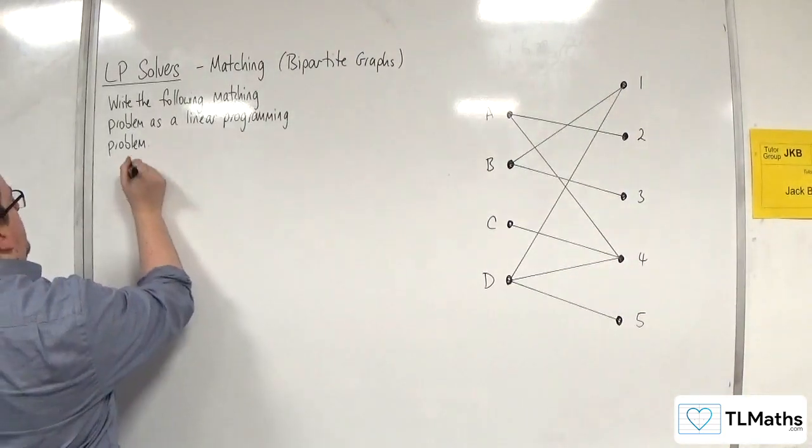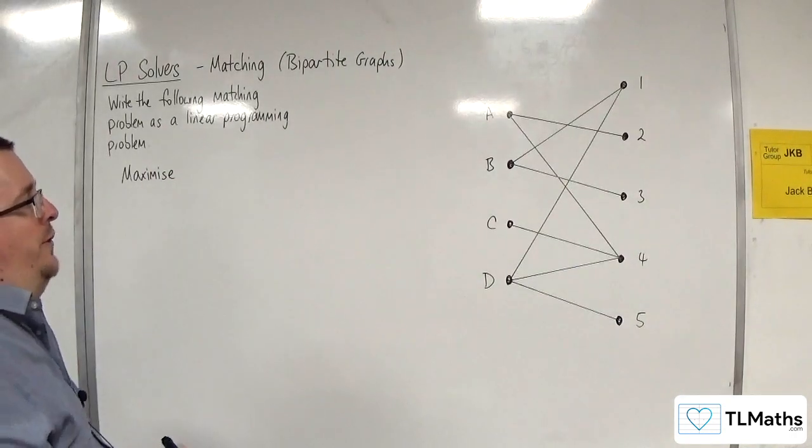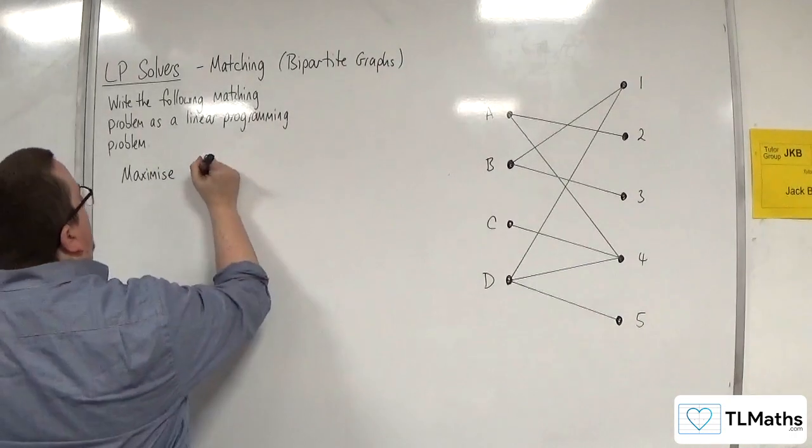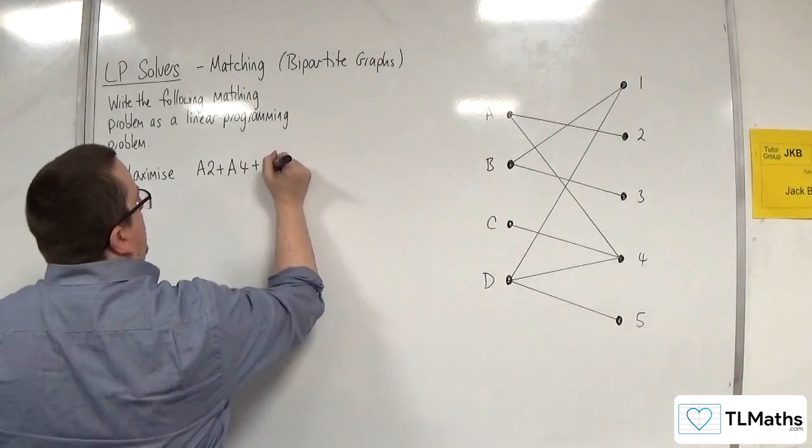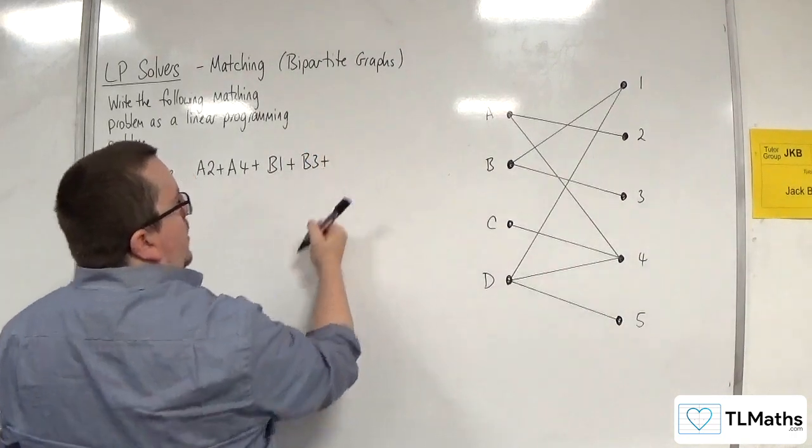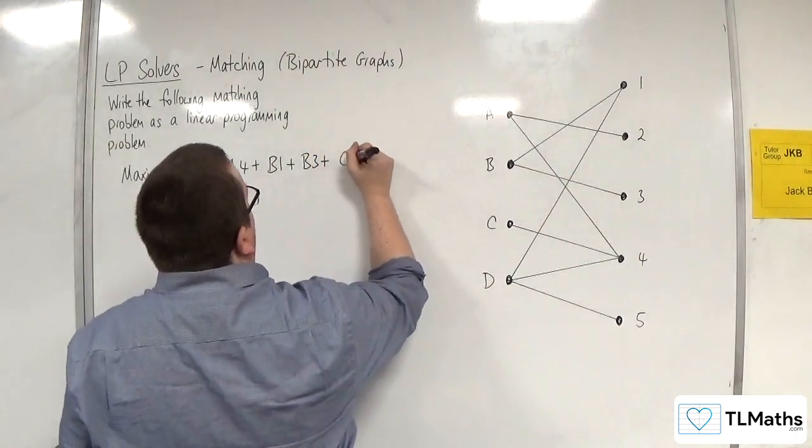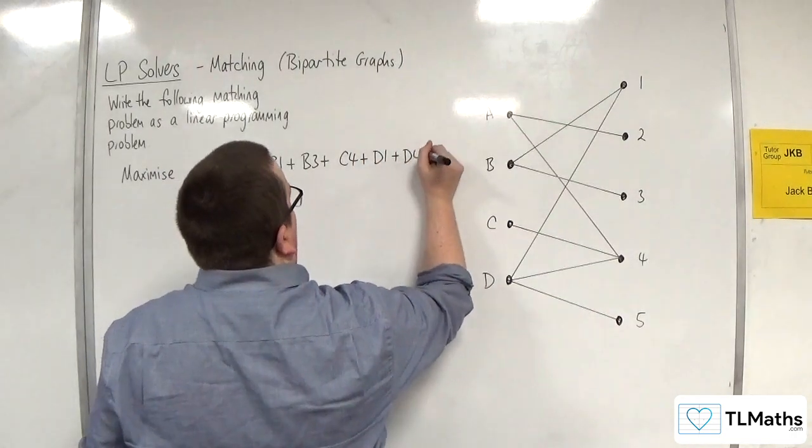So first of all, we want to maximize and we want to have the sum of all of the edges. So we've got A2 + A4 + B1 + B3 + C4 + D1 + D4 + D5.